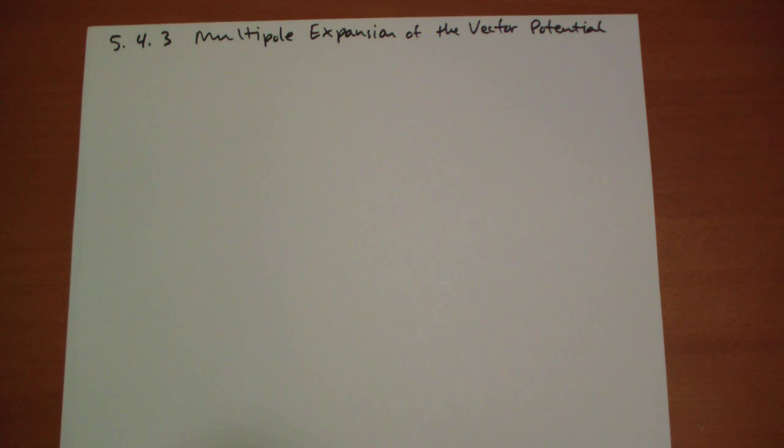Hi, this is Jonathan Gardner, section 5.4.3 of Griffith's Introduction to Electrodynamics, 2nd Edition. Here I cover the multiple expansion of the vector potential. And if I go too fast, you can rewind. If you have questions or comments, you can put them in a comment or the video response below. And be sure to like and share this with your friends so that people can find out about it.